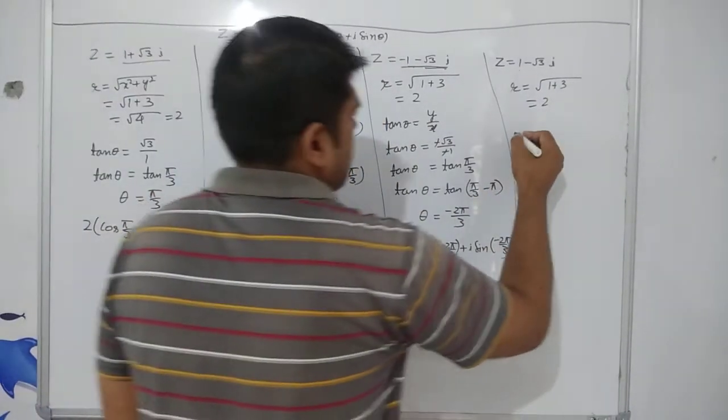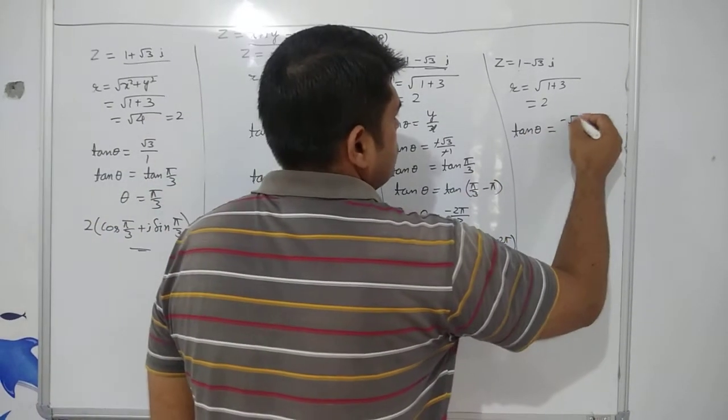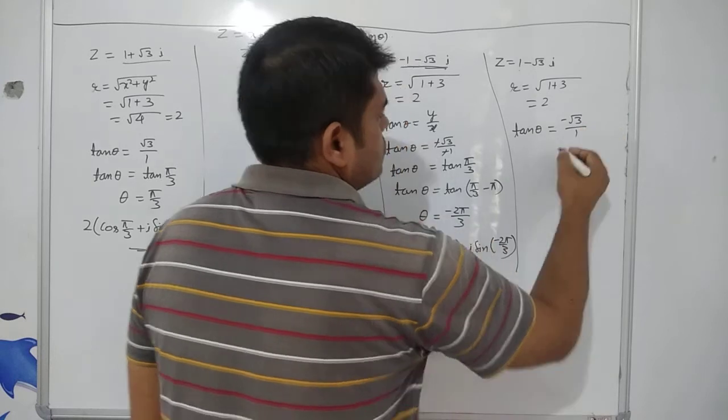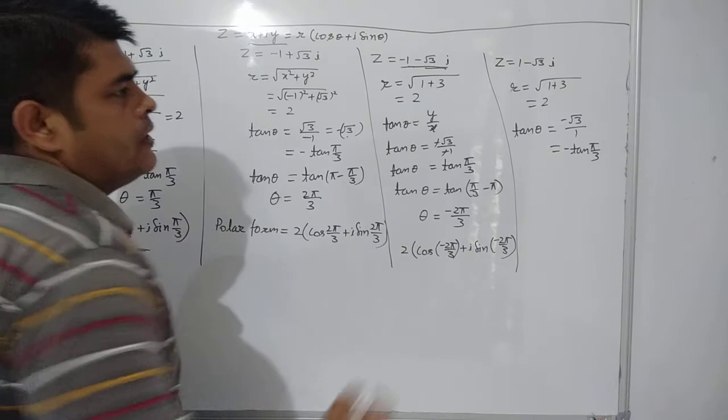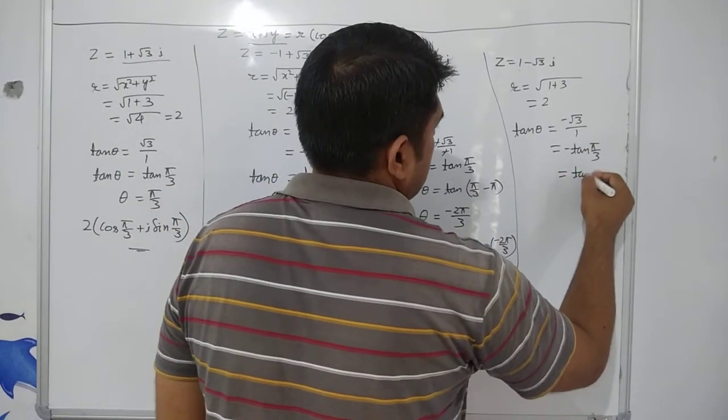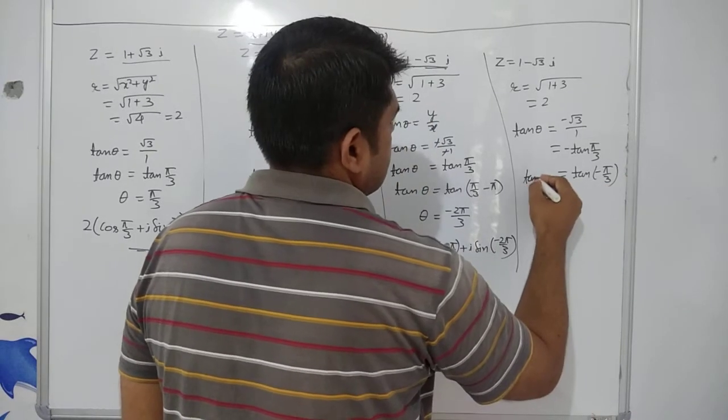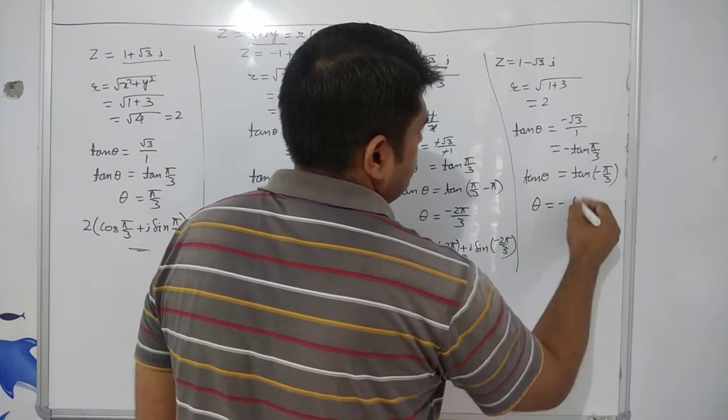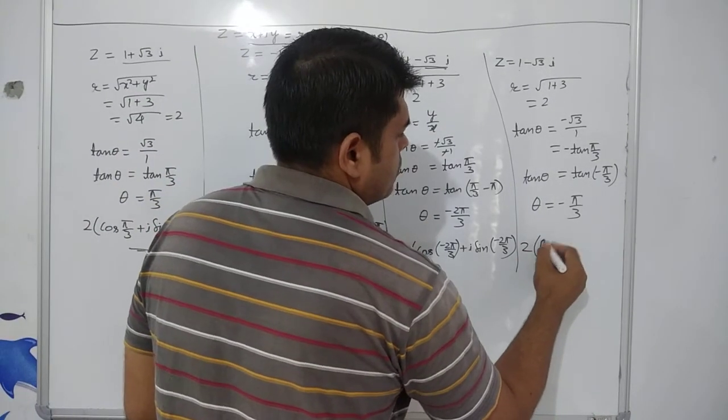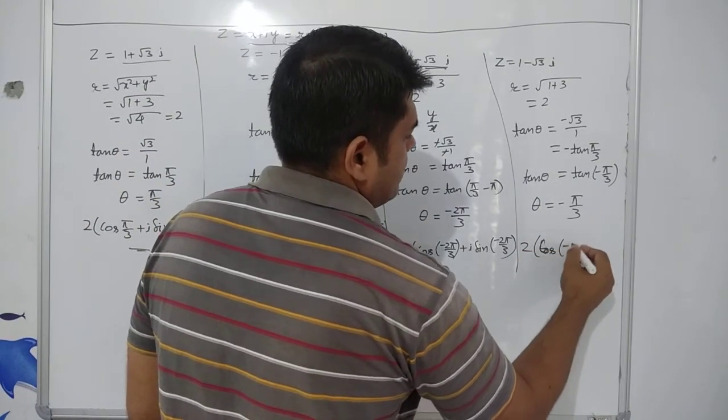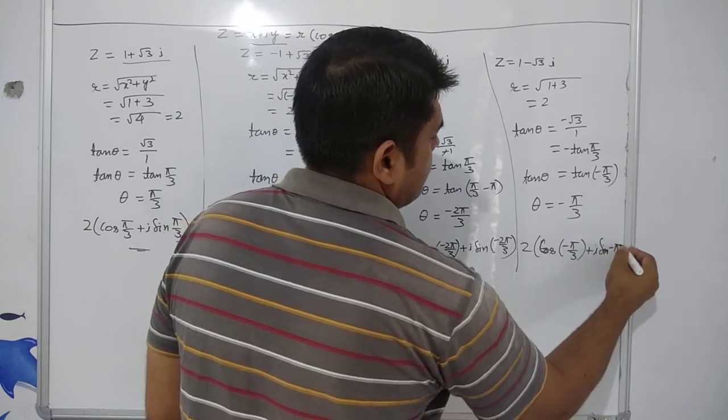Now, we have to evaluate theta that is argument of z. So, it is minus root 3 by 1. So, it is equals to minus tan pi by 3. So, in fourth quadrant, you have tan of minus pi by 3. You have to take as it is. So, you have theta equals to minus pi by 3. So, the polar form will be 2 cos minus pi by 3 plus iota sin minus pi by 3.